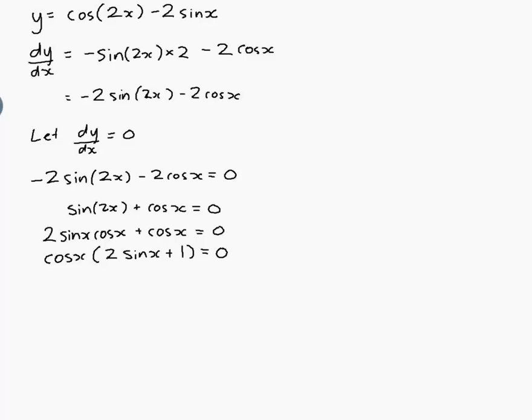Now I've got two things multiplied together equal to 0. So that means that either cos(x) is 0 or 2sin(x) plus 1 is 0. So cos(x) equals 0.